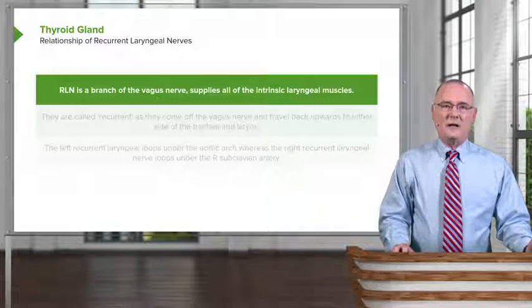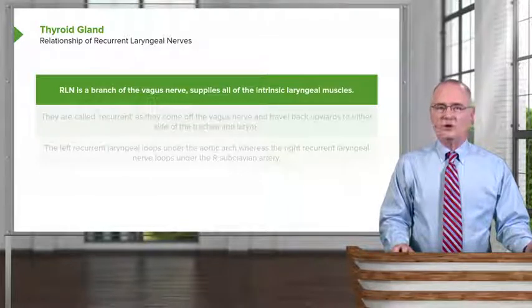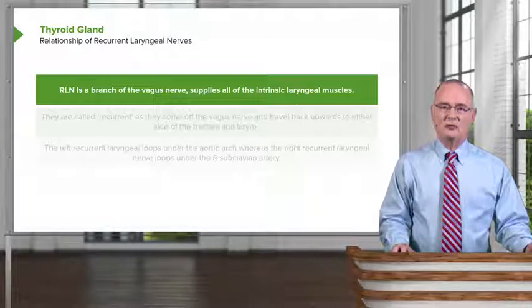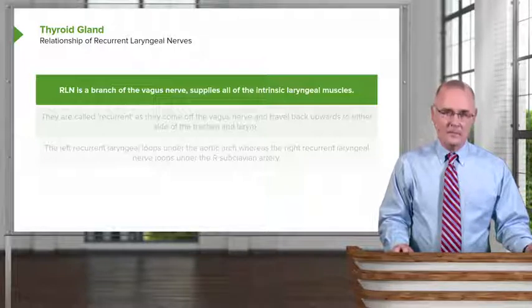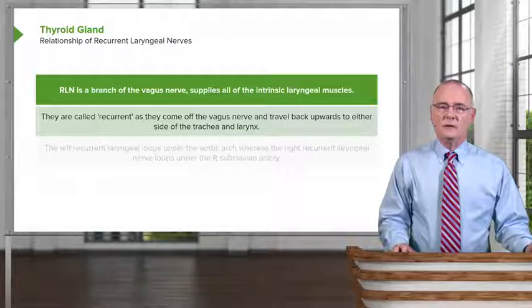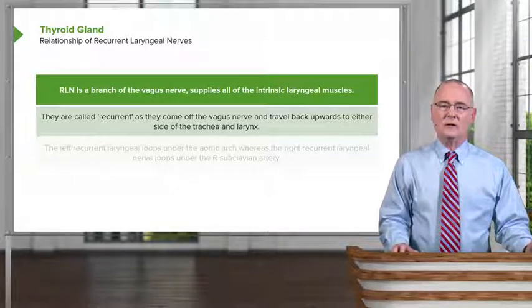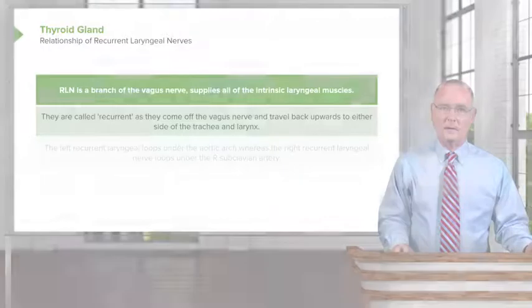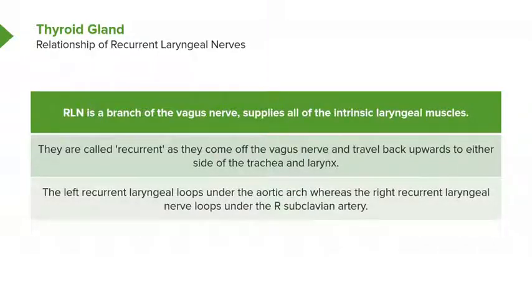Both recurrent laryngeal nerves are branches of the vagus nerve, and they supply all the intrinsic laryngeal muscles with the exception of the cricothyroid. They are called recurrent because they come off the vagus nerve and then travel back upwards to either side of the trachea, ultimately reaching the larynx. The left recurrent laryngeal nerve loops around the aortic arch in the vicinity of the ligamentum arteriosum, whereas the right recurrent laryngeal nerve loops more superiorly and passes under the right subclavian artery.